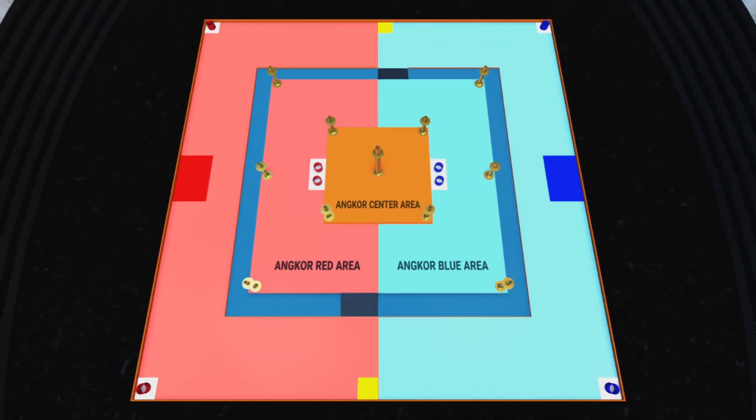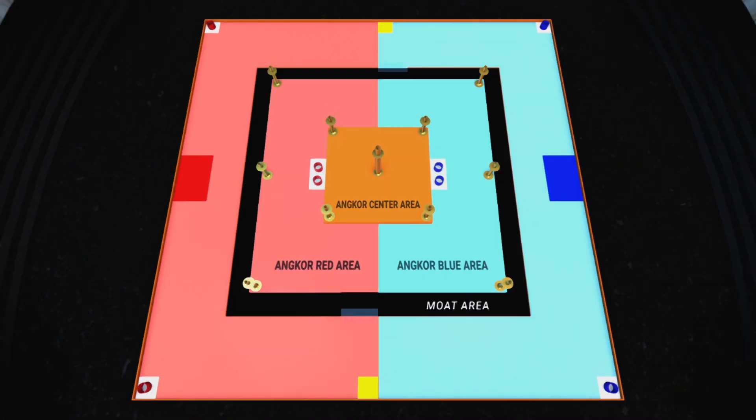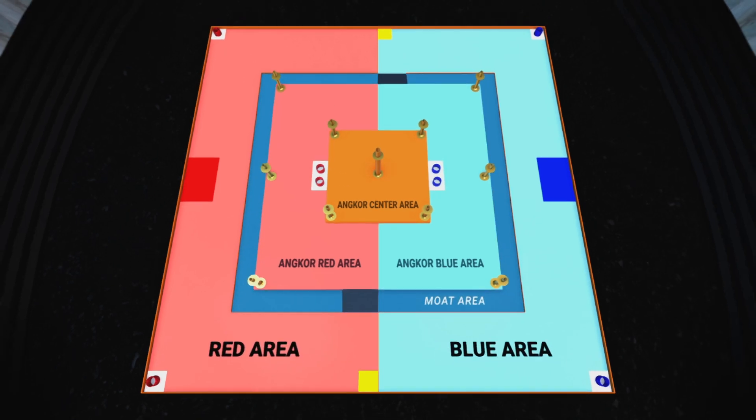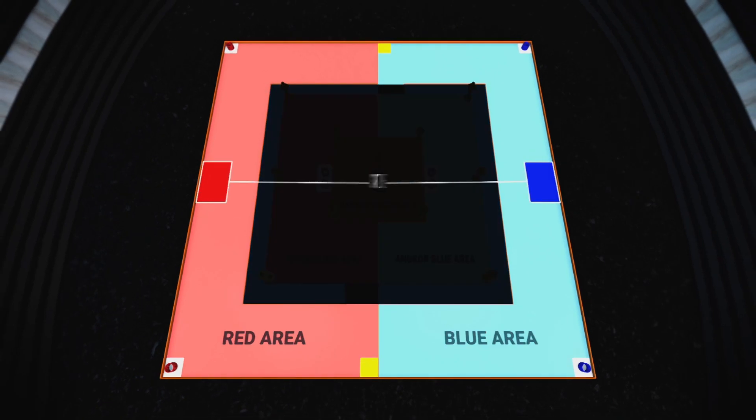The Angkor Red area and Angkor Blue area is surrounded by the moat area, which is connected to the red area and blue area with two bridges. Inside of red area and blue area, each has start zone, retry zones, and two ring zones.